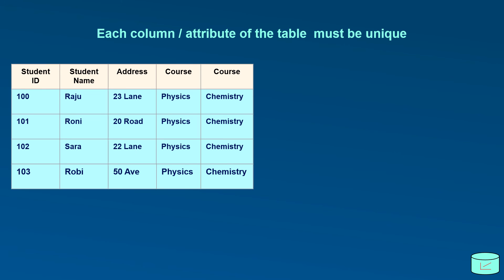Third condition. Each column of the table must be unique. In this student table, the course column has been repeated. So, repeated column will create issue for data retrieving from the table. Repeated column needs to be eliminated.